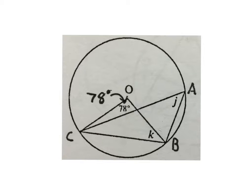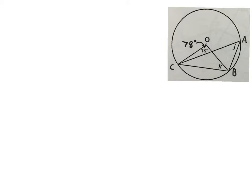Good day. In this video we're going to do another four circle geometry riders with reasons. In this circle they tell us O is the center, the angle at the center is 78 degrees. They have C, B, and A on the circumference, and we have to work out what J and K are. On the sketch, OC and OB are radii.